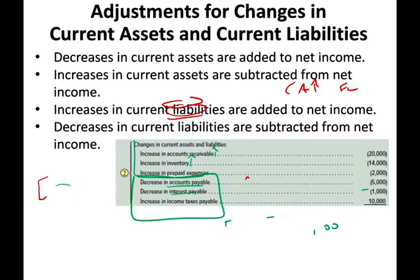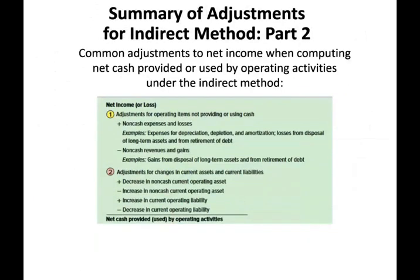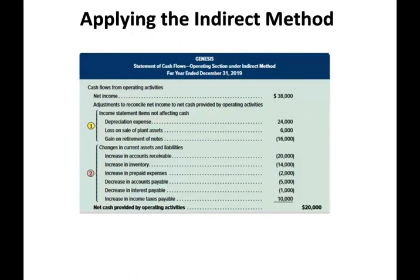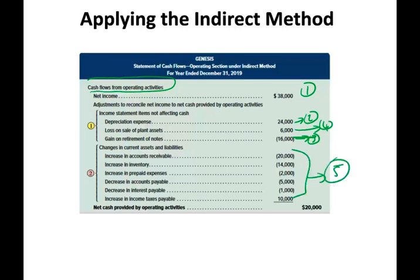Putting it all together: the company made $38,000 in accrual net income, but on a cash basis they only made $20,000. It means they did not generate as much cash as their net income suggested. They are profitable, but from a cash perspective they collected less than their accrual net income indicated.